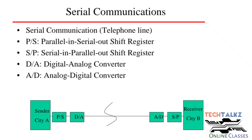In serial communication, parallel data goes into a serial-out shift register. Then the digital data is converted to analog. Modulation techniques are used during the transmission process. At the receiver end, analog data is received, converted digitally, and serial data is collected one by one and converted to parallel using a serial-in parallel-out shift register.